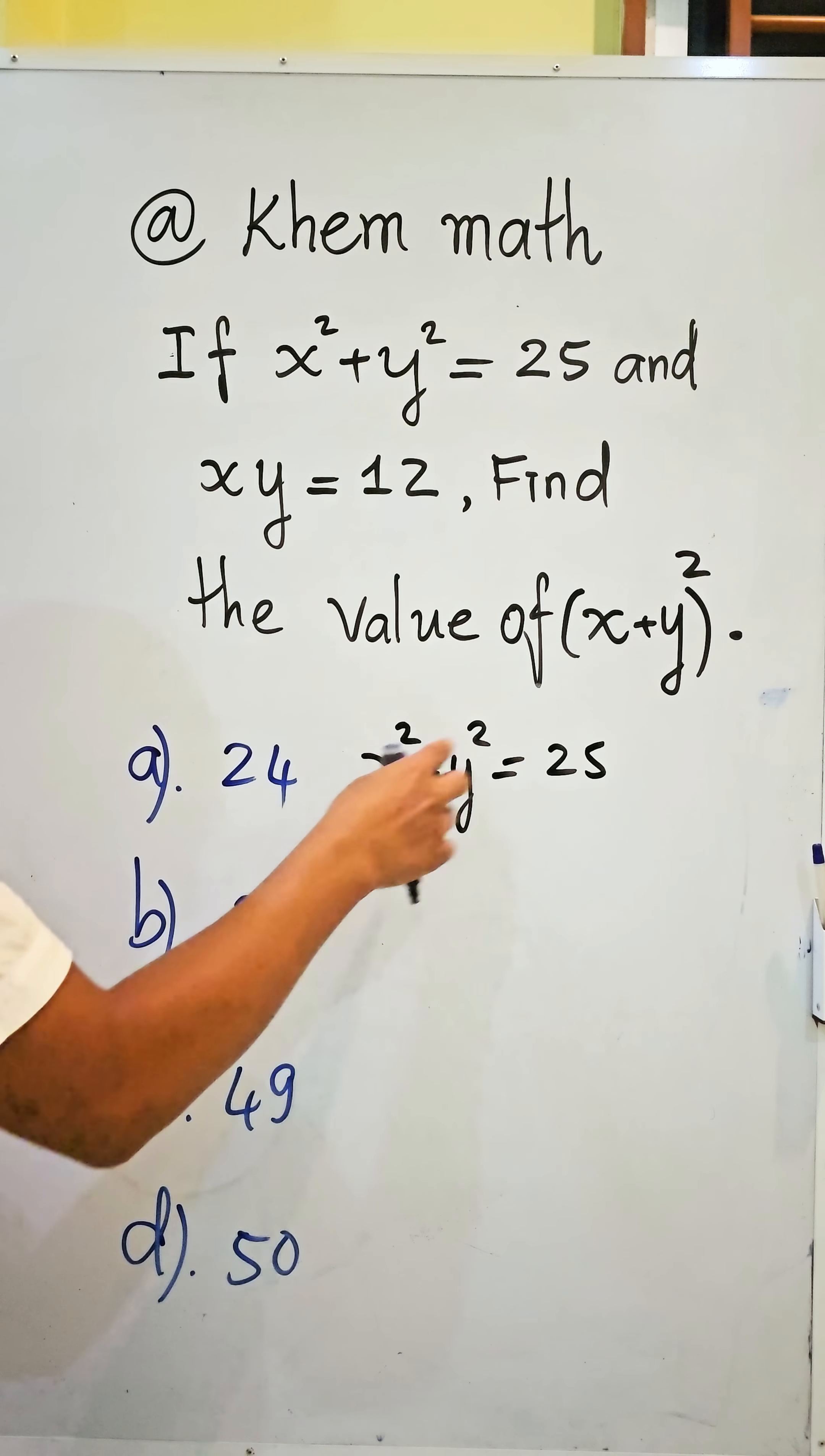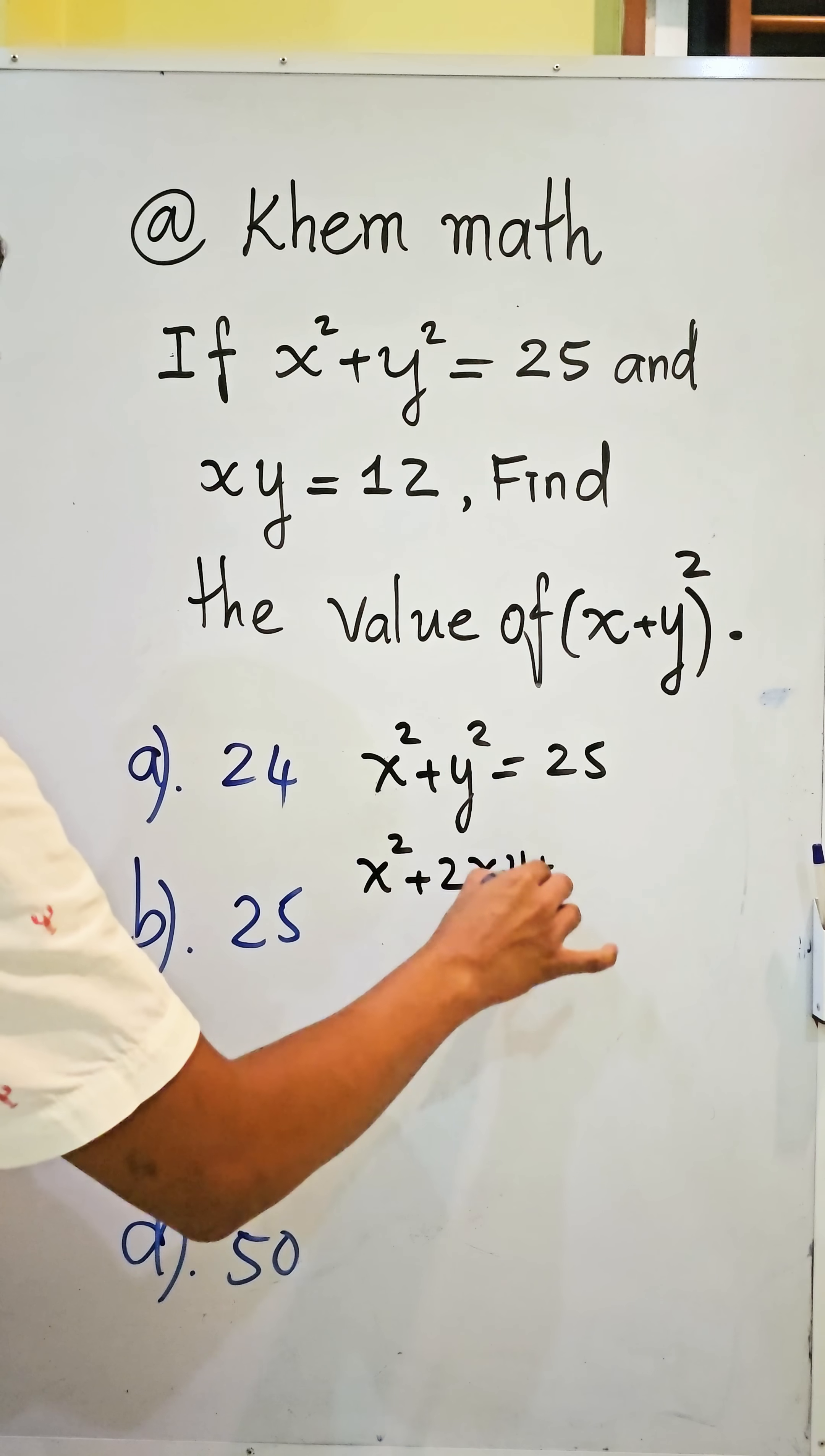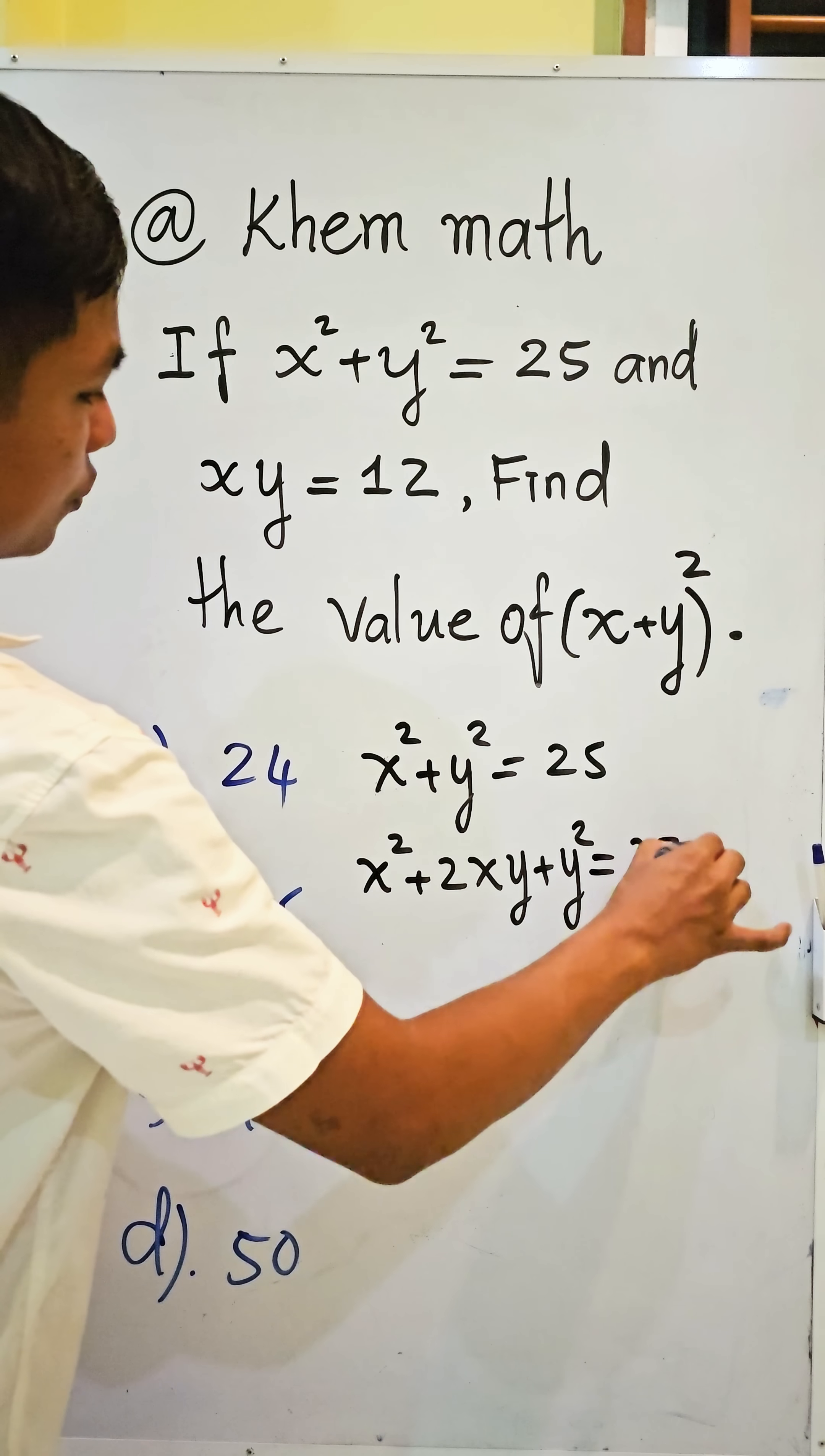And now I add the inverse of this equation with 2xy. So we get x squared plus 2xy plus y squared equals 25 plus 2xy.